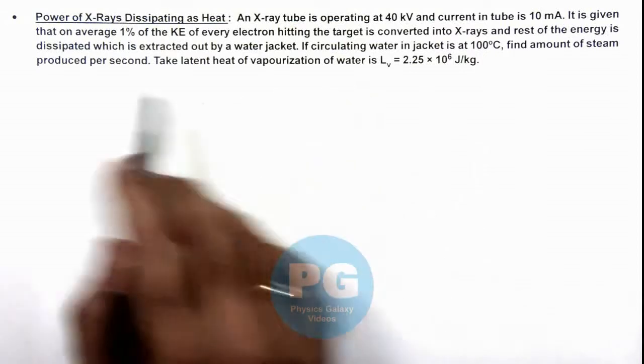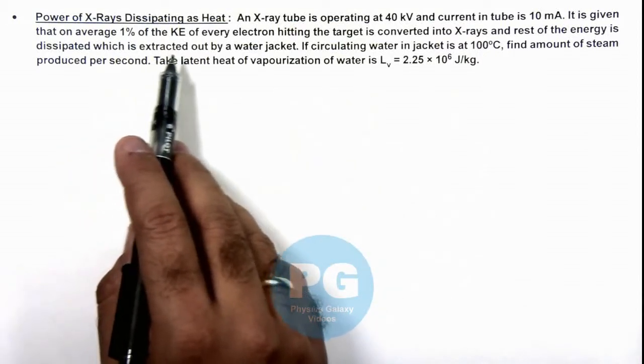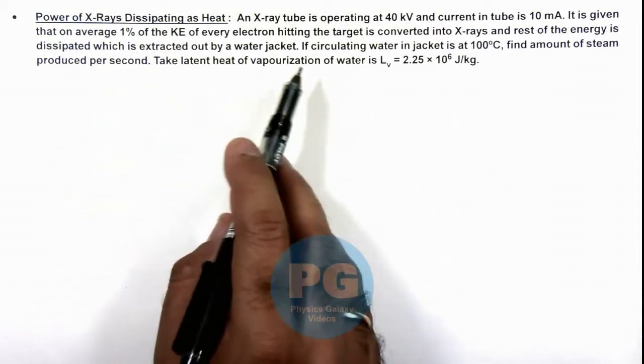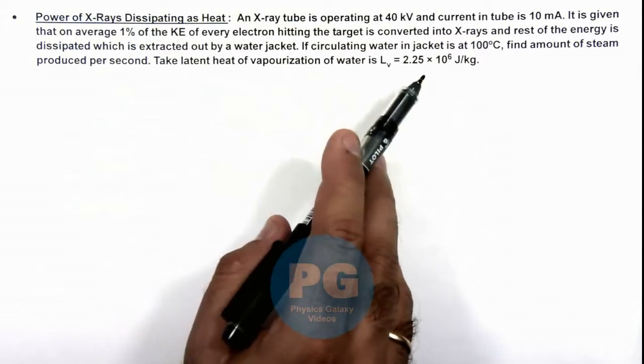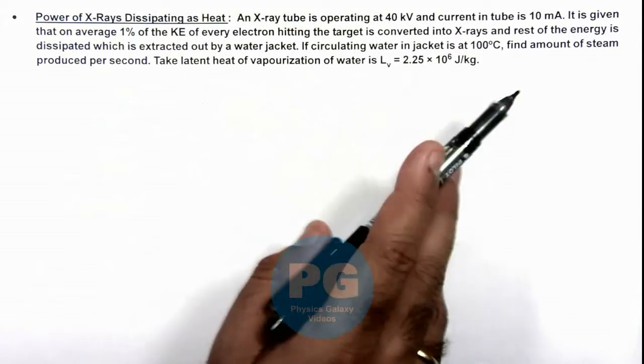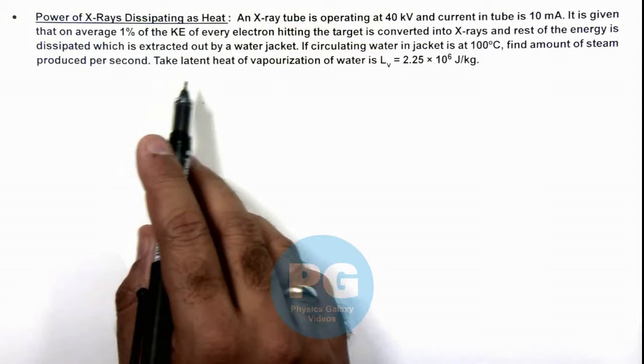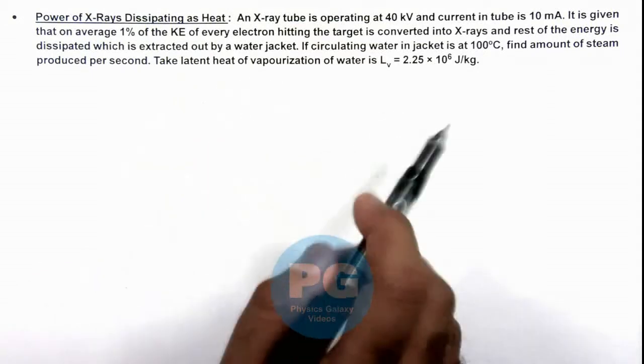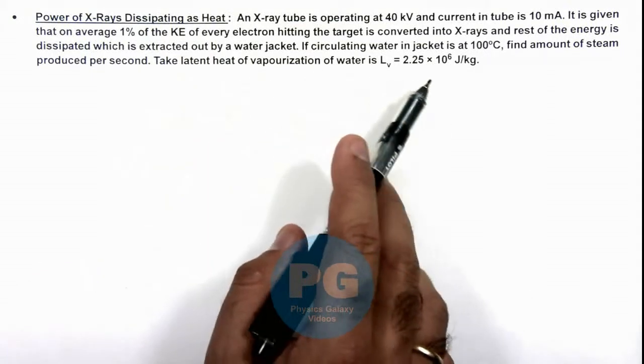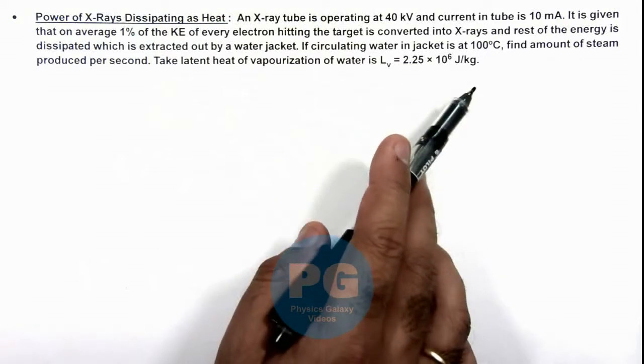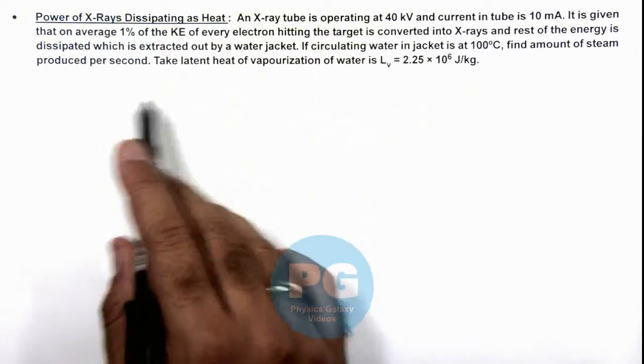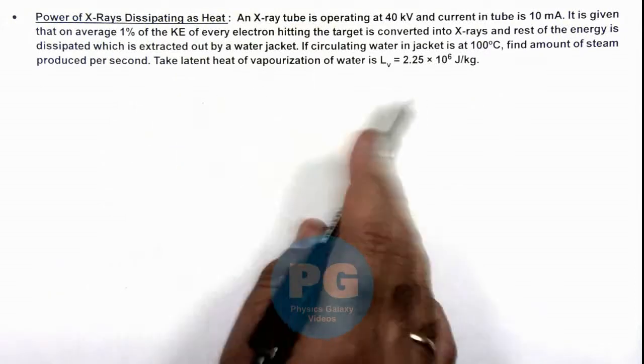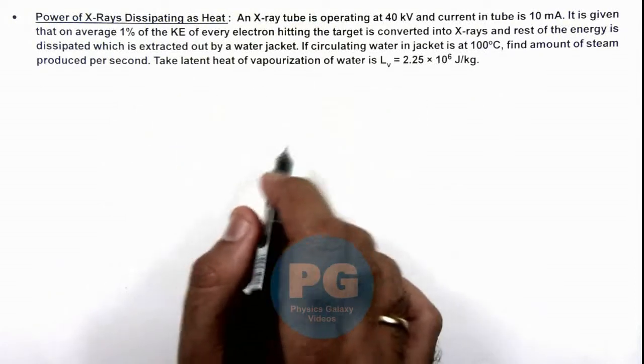It is given that on average 1% of the kinetic energy of every electron hitting the target is converted into X-rays, and rest of the energy is dissipated which is extracted out by a water jacket. Here it is saying if circulating water is at 100 degrees Celsius, we are required to find amount of steam produced per second. We are also provided with a latent heat of vaporization of water.